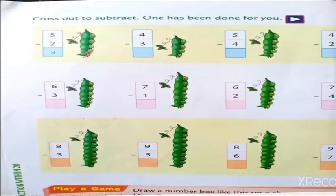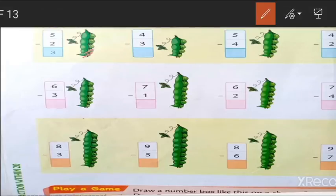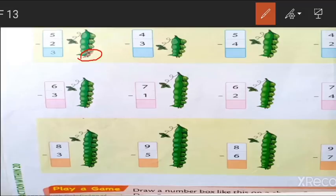Look at the picture. There are different figures drawn as well as sums written. The first one is done for you: 5 minus 2, we get 3. Next, 4 minus 3 — we have 4 beans, take away 3: 1, 2, 3. How many remaining? 1 bean. So 1 is our answer.